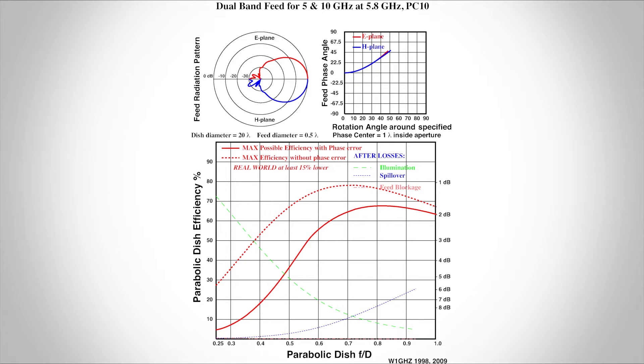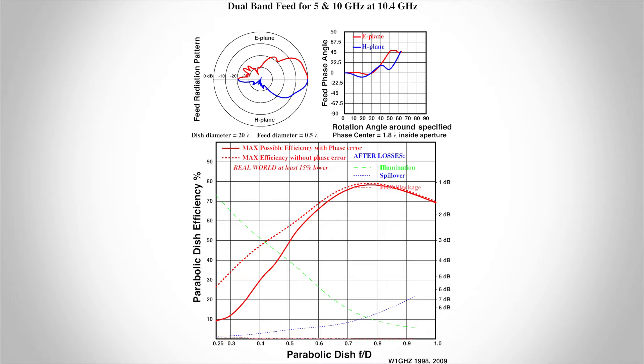He reports that what he's come up with looks like it would work pretty well for an offset dish like the DSS dishes with good efficiency at both bands. Simulation says the isolation from 5.8 gigahertz to the 10 gigahertz port is about 80 dB. Performance plots are shown here.